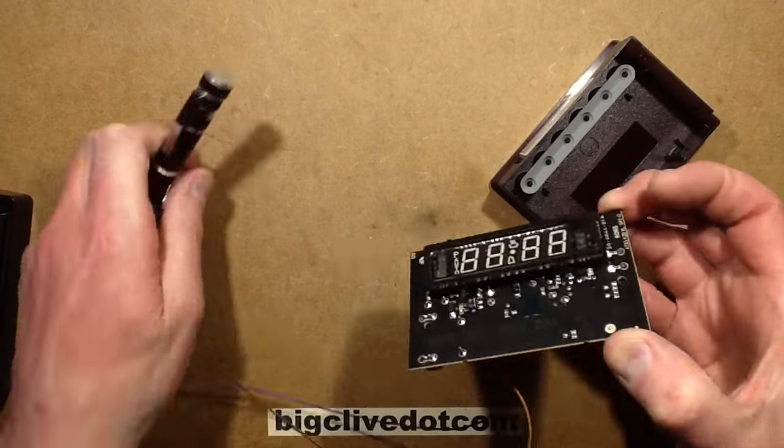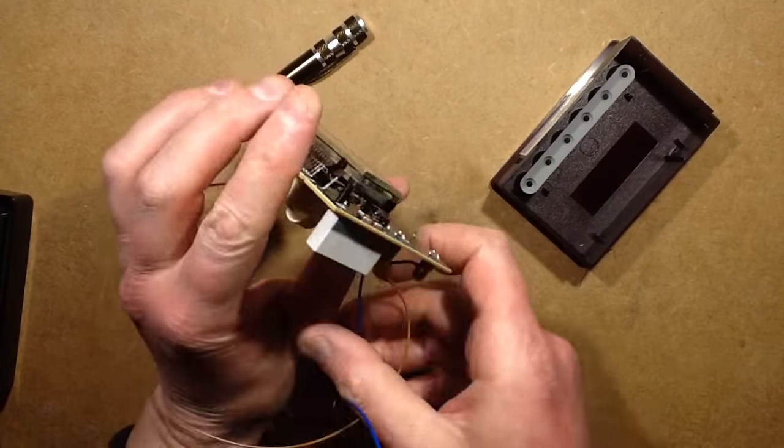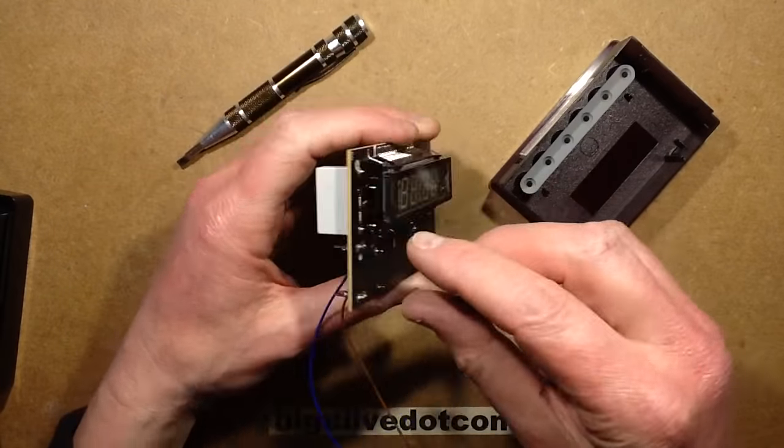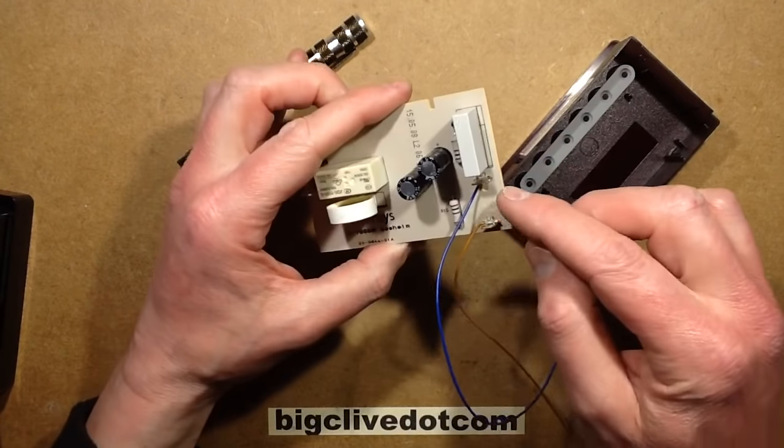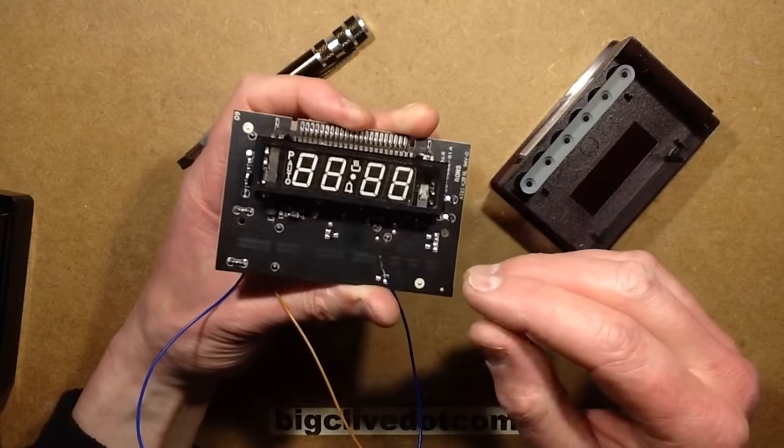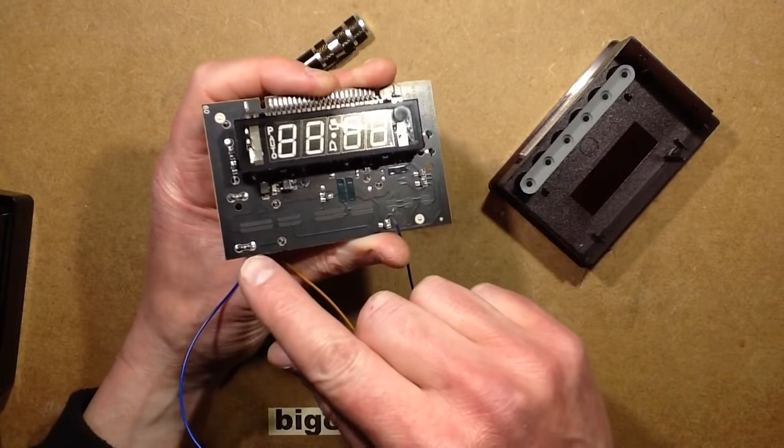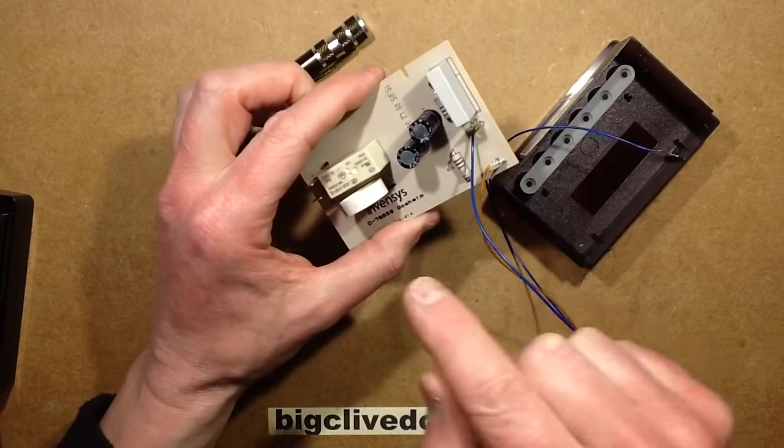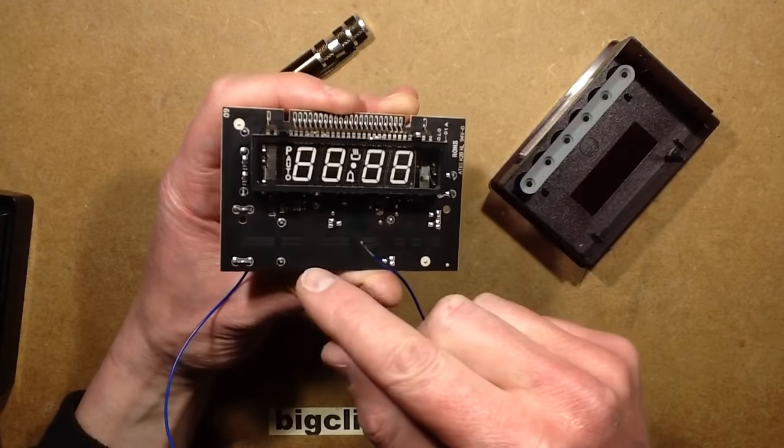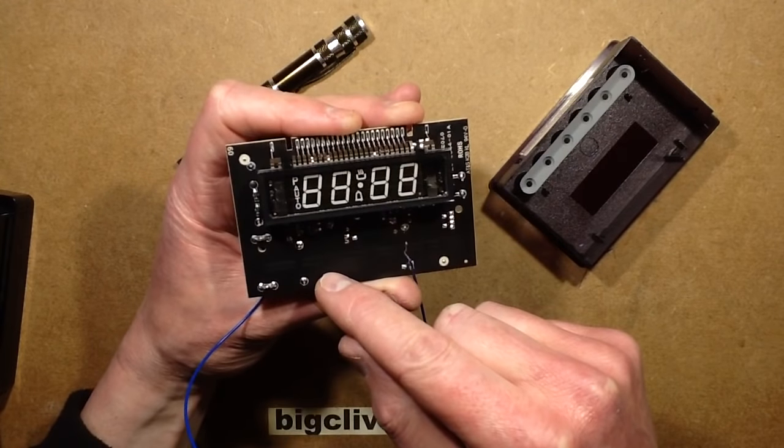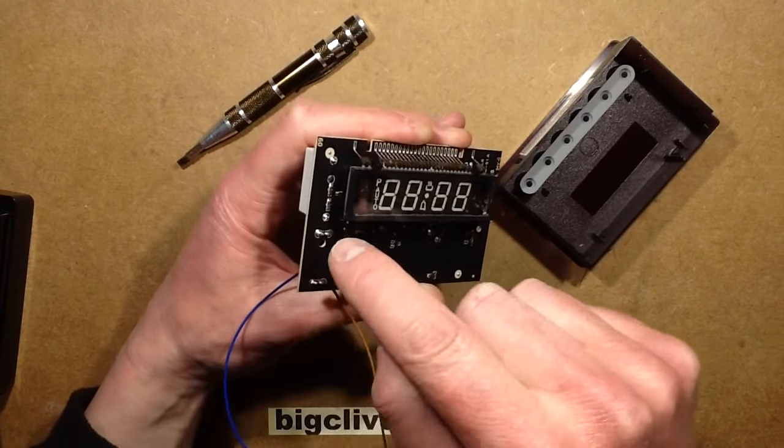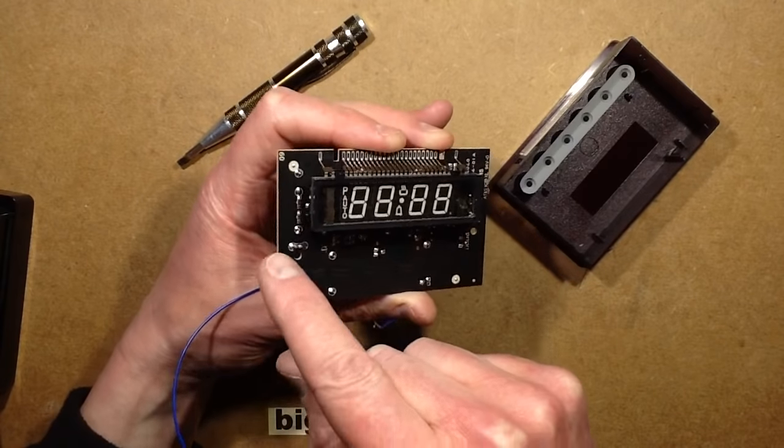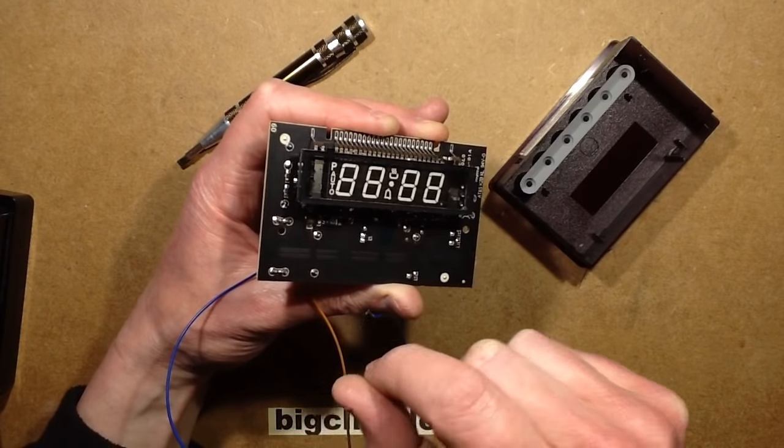I'm guessing that may be a capacitive dropper supply. The neutral is going straight to this capacitor. The live is going through this 100 ohm resistor. There are a couple of discharge resistors across that.